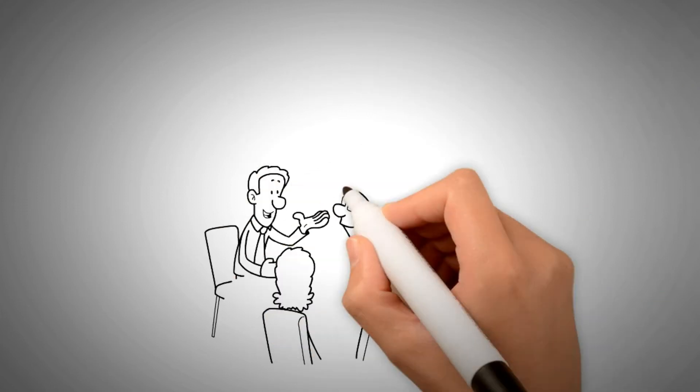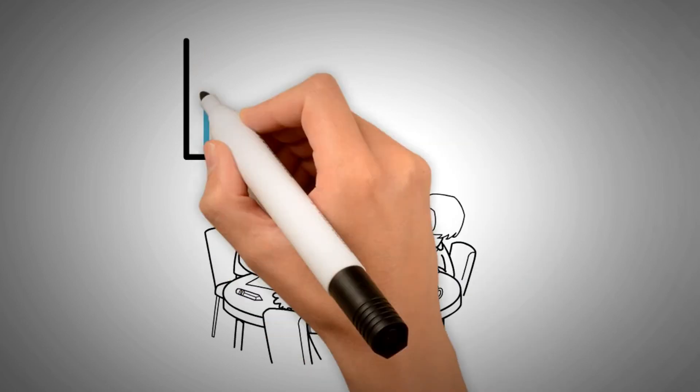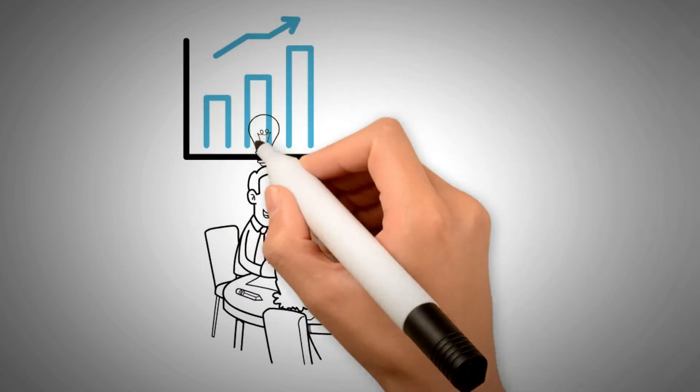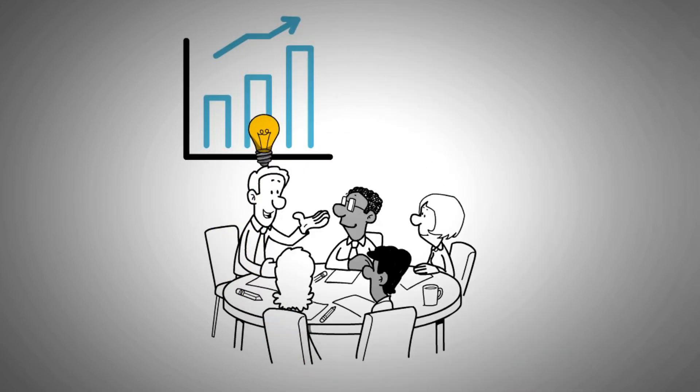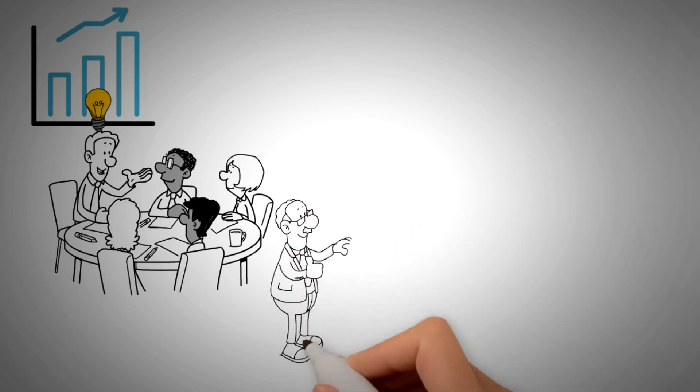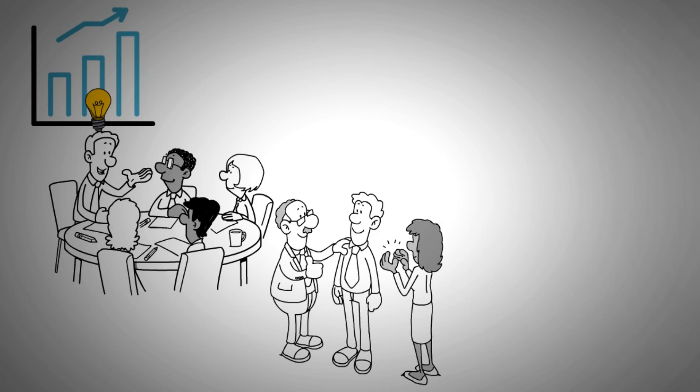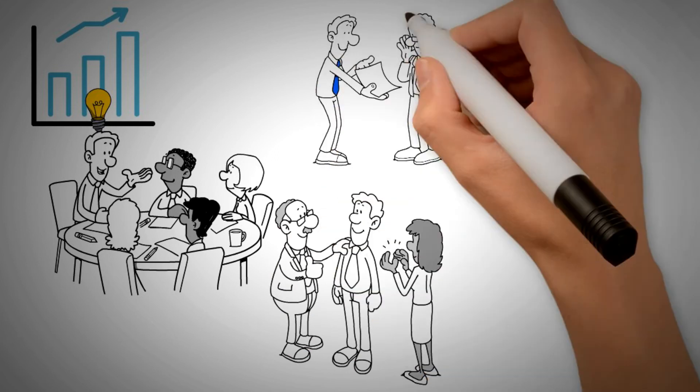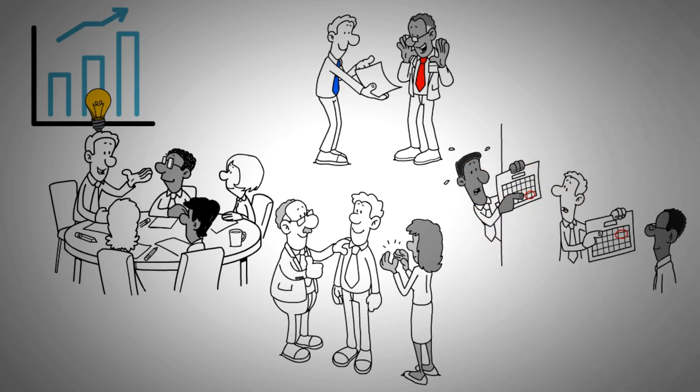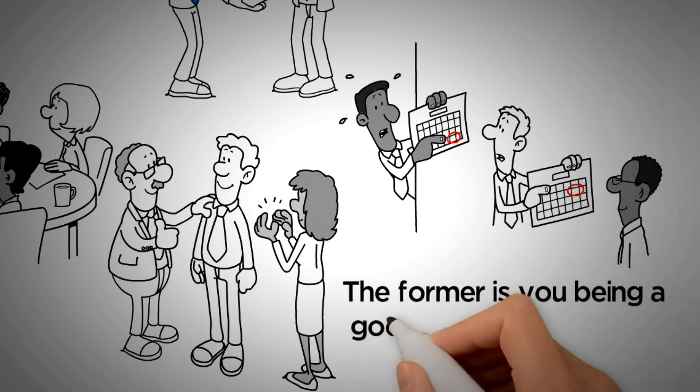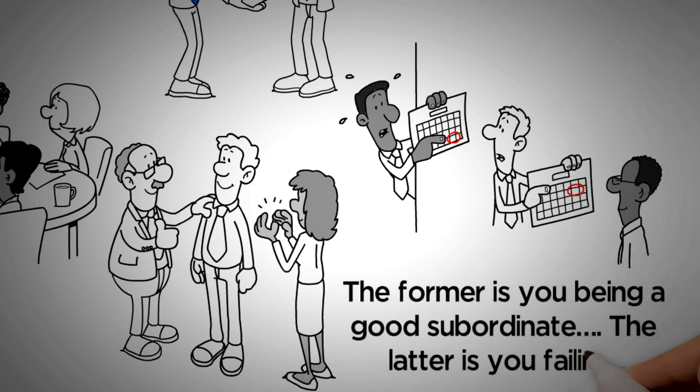So, what you're trying to do is continuously develop your own abilities so that you can do whatever the organization needs. And, at the same time, you're also going to manage your leadership's expectations to the extent that you can. Doing this expectation management up front is better than busting your deadline and then making excuses after the fact. The former is you being a good subordinate. The latter is you failing.